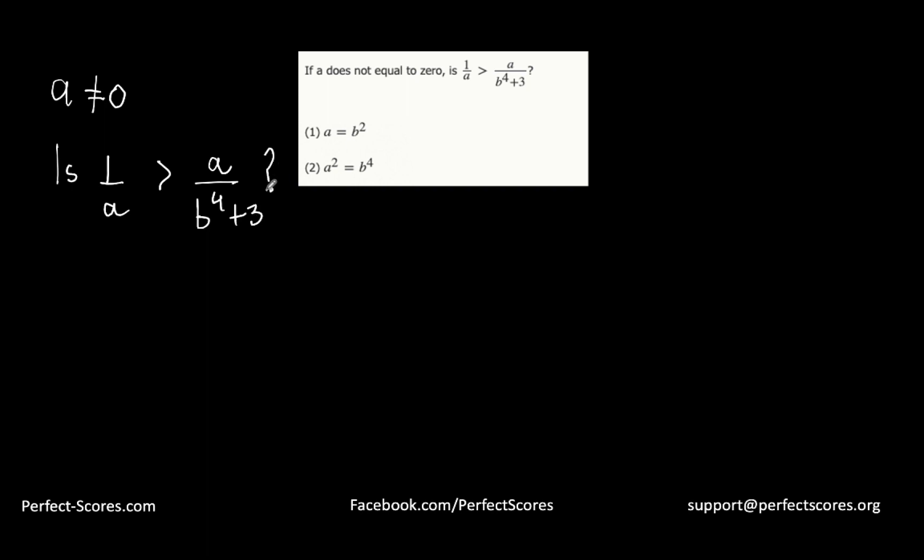We can't solve this further because we do not know whether a is positive or negative. If a was positive then we could cross multiply and move forward, but since we don't know, this is what we have to work with.